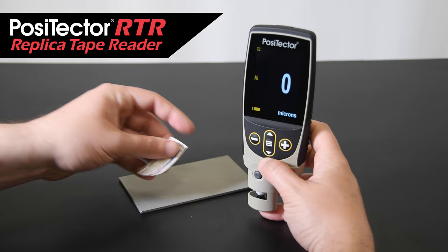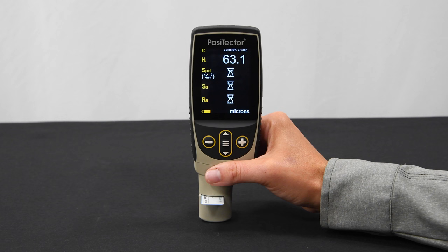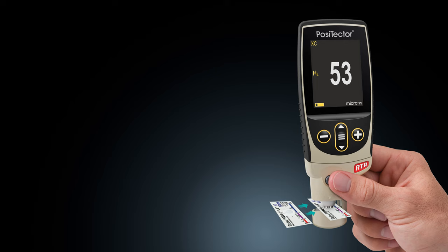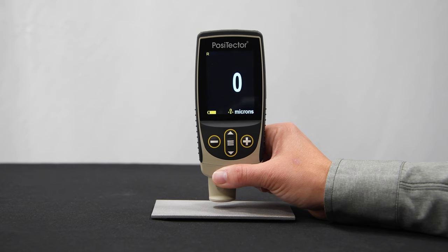DeFelsko's other solution for measuring surface profile, the PosiTector RTR replica tape reader, uses industry standard Testex tape to measure profile height. Models are also available that can create 3D images from the replica tape to measure peak count and other surface profile parameters. Learn more about the PosiTector RTR in the How to Use Replica Tape to Measure Surface Profile video at the link in the description below.